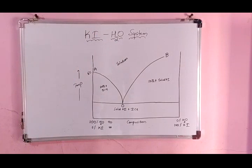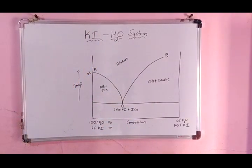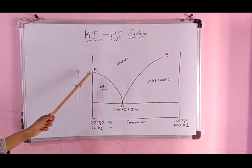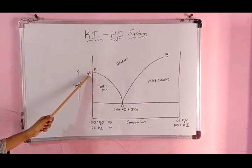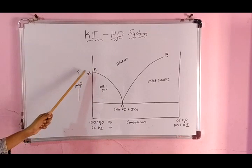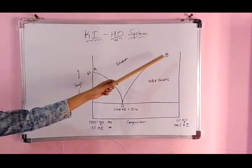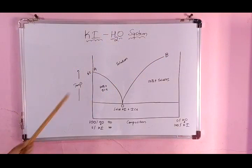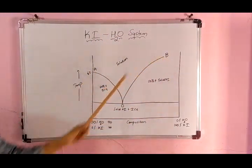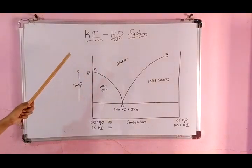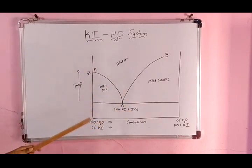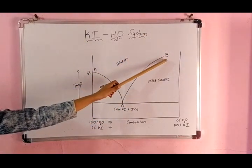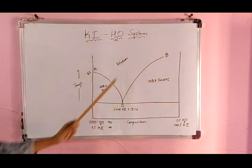Here is the diagram I have plotted for the KI-H2O system. One important feature: I have shown point A, which is the melting point of ice — or the freezing point of water. For point B, that is the melting point of KI, I have not shown it because the melting point of KI is very high. It is not possible to show in this figure, so point B is an imaginary point you have to imagine.